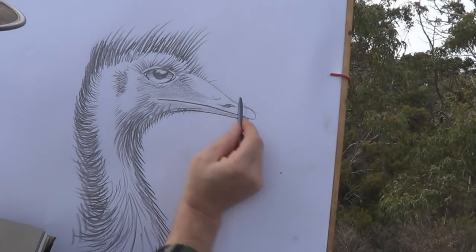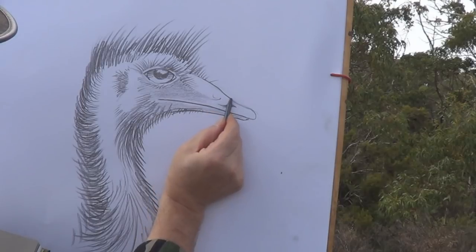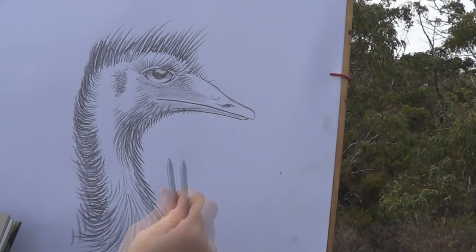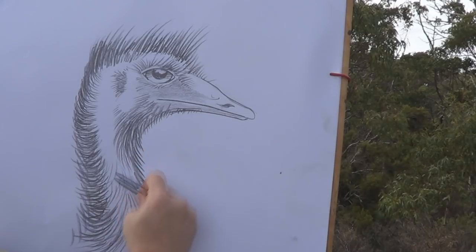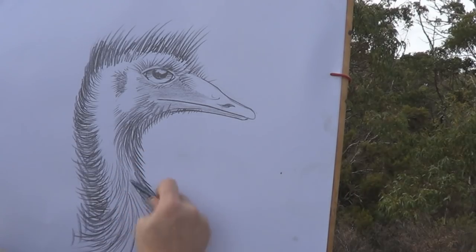Look at that nice little bit of shade here. Darken that up. So I've got a lot of line work here. This dissolves into feathers here.